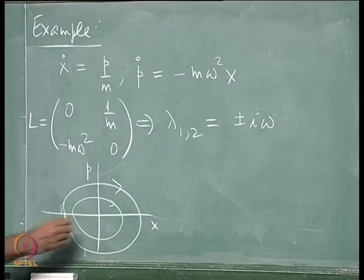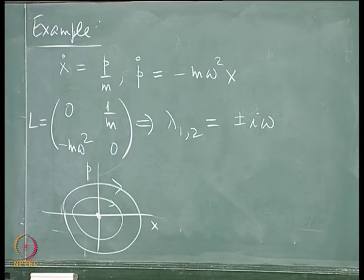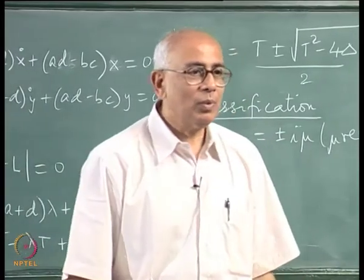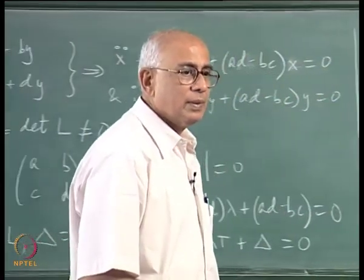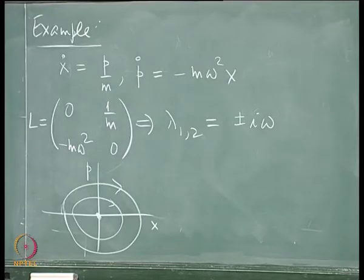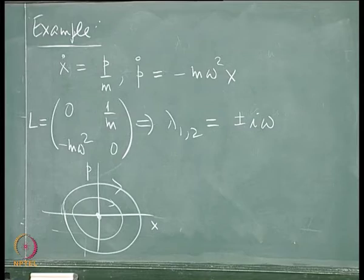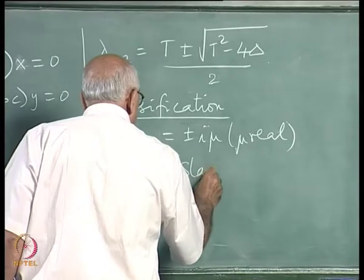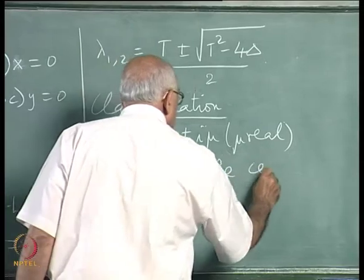Would you call this critical point stable, unstable, or asymptotically stable? It is certainly not unstable — trajectories do not blow away from it. On the other hand they do not fall into it either; they just go round and round. So we call this a stable critical point, and this particular case is called a center.